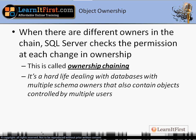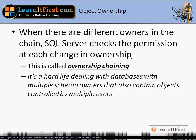Let's get back into this idea of the ownership chain. We closed out the last video with an example where the same owner owned all the objects — that's normal, that's the way it is 98-99% of the time. However, when you do have different owners in that chain, SQL Server will check permissions at every change in ownership. It's called ownership chaining, and it's a lot of work for a DBA.